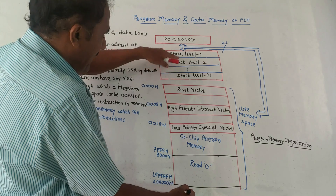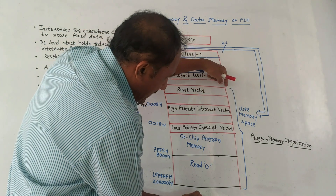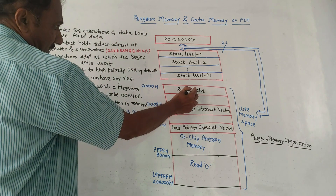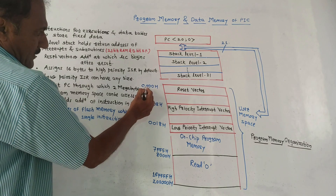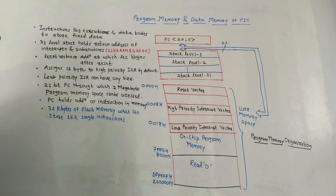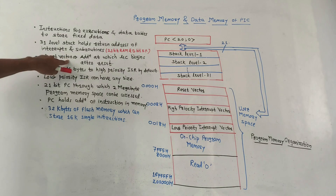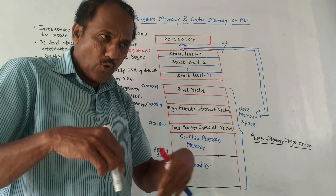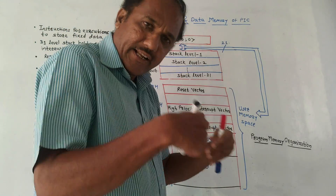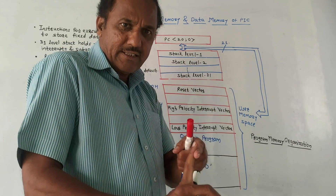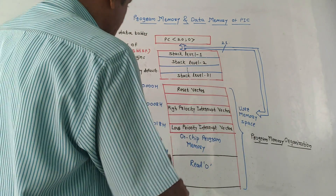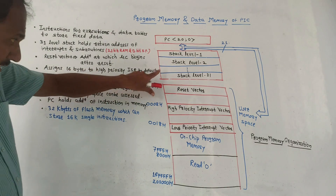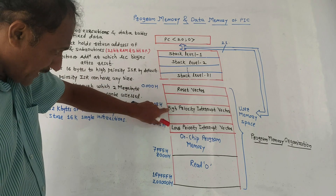The part that is part of program memory is called user memory space. It starts from the reset vector, whose address is 0000h (h stands for hexadecimal). The reset vector is the address at which the microcontroller begins after reset — programming should start at that certain location. It then assigns 16 bytes after the reset vector.